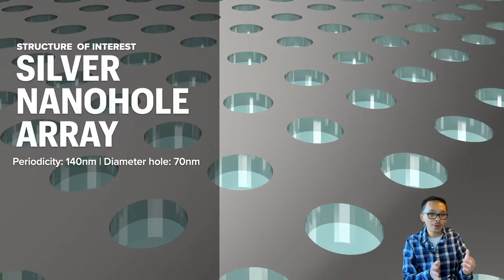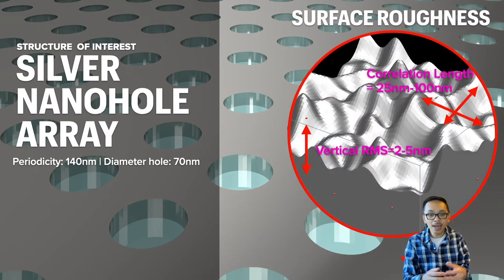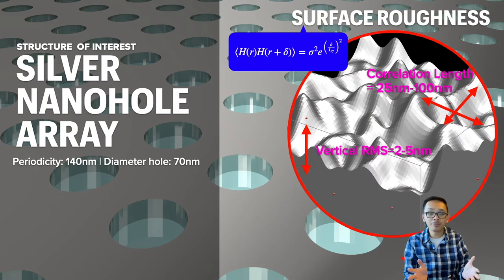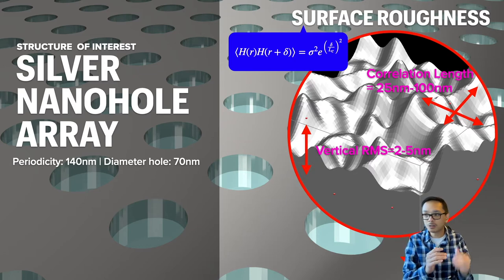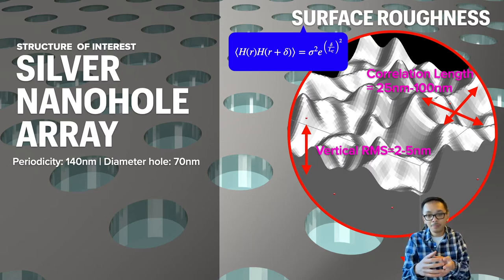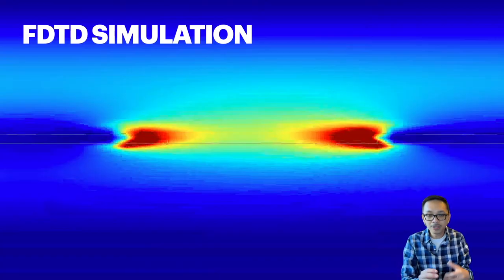For this case, we use silver nanohole arrays as a case study. We use a surface correlation function to model the surface roughness, with two roughness parameters: the vertical RMS, which adjusts the height of the roughness, and the correlation length, which describes the spread along the X and Y axes.